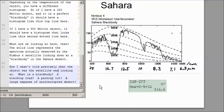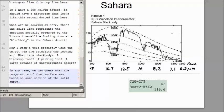What are we looking at here, then? The solid line represents the spectrum actually observed by the Nimbus 4 satellite looking down at a blackbody in the Sahara Desert. Now, I wasn't told precisely what the object the satellite was looking at. What is a blackbody? A blacktop road could be kind of a blackbody. A parking lot? A large expanse of uninterrupted desert?